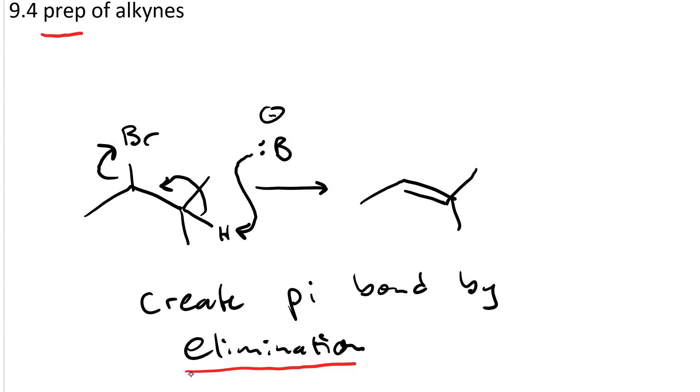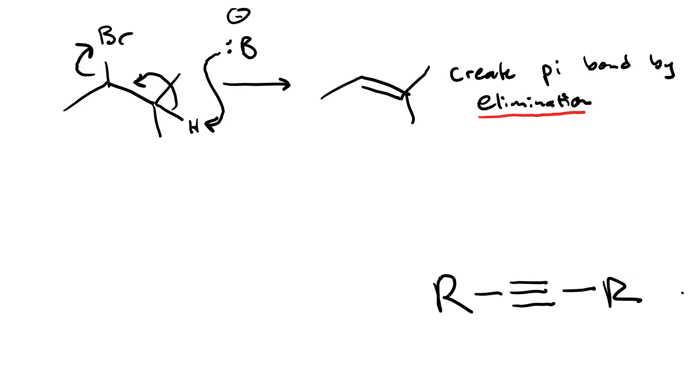So if we want to make an alkyne, we need to make two pi bonds. You'll recall that an alkyne has two pi bonds. That means we need to do two eliminations.